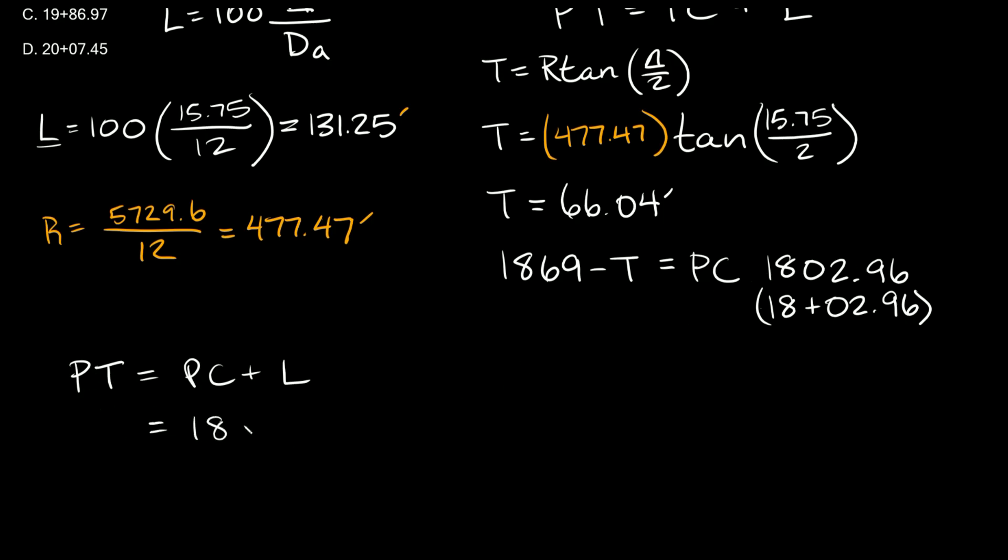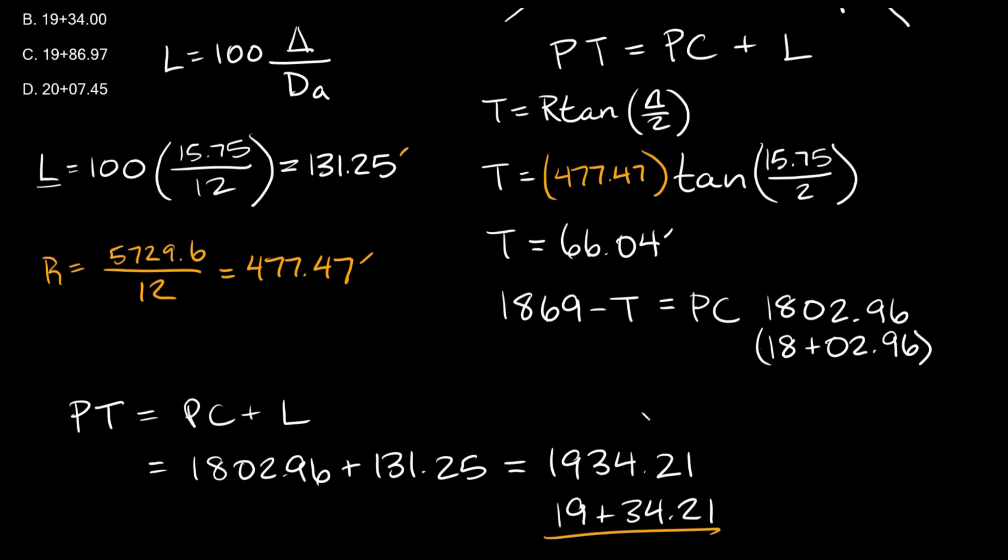Let's see, 1802.96 plus the length, which is 131.25. And when you add those two bad boys up, you get 1934.21. And if we wanted to write this as a station, then it would simply be 19 plus 34.21. So there's your final answer.